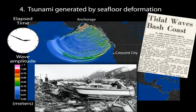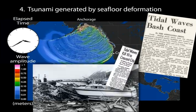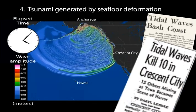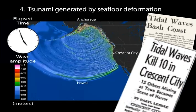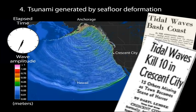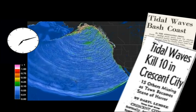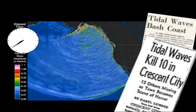Astonishingly, only 9 people died from the earthquake itself, but 130 were killed by the subsequent tsunami that wreaked havoc across the northern Pacific region.